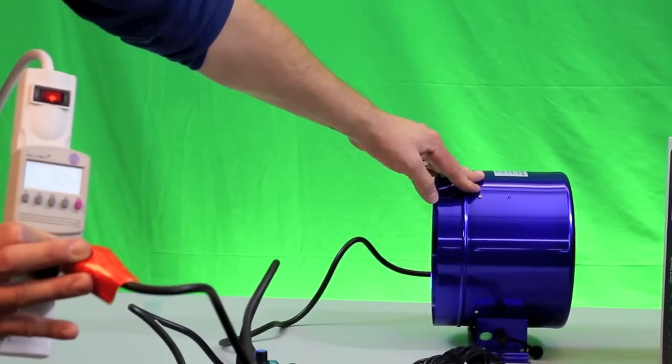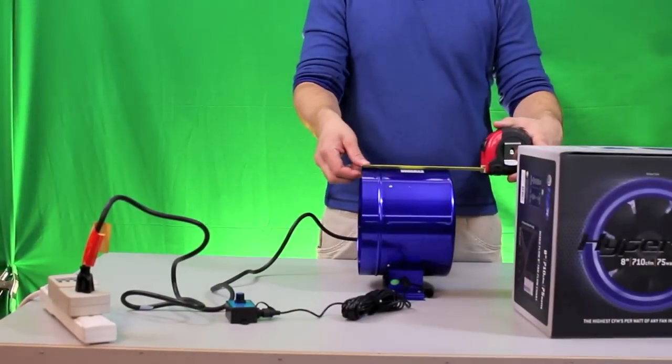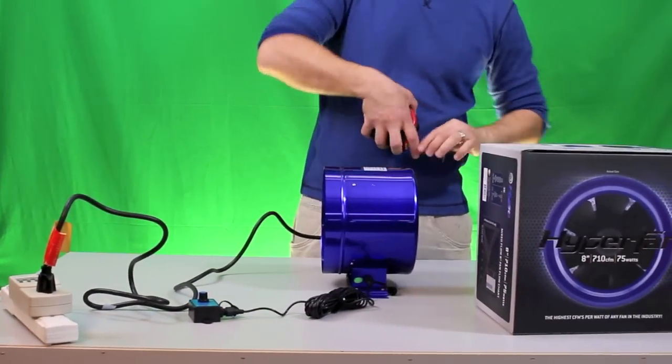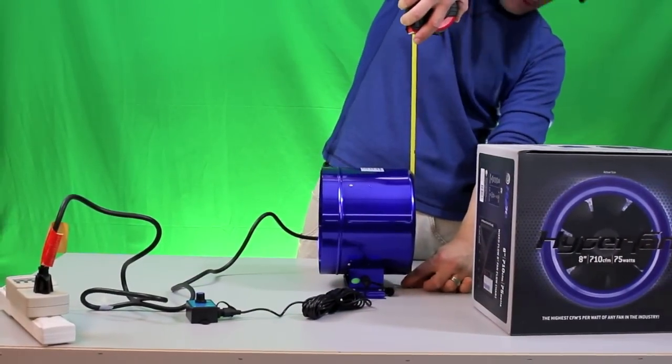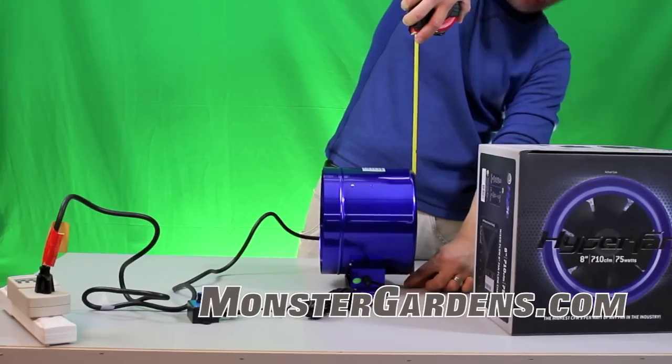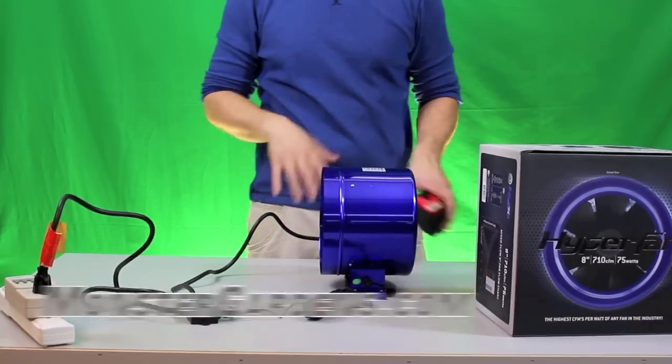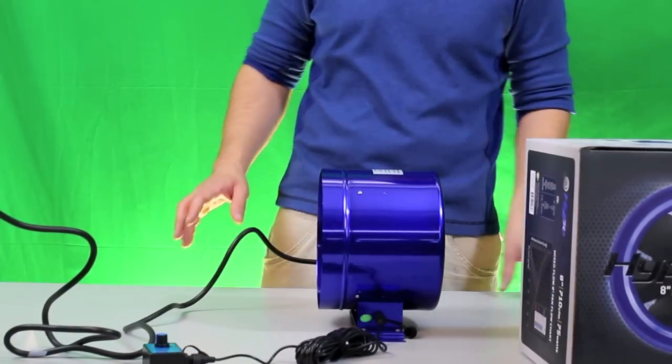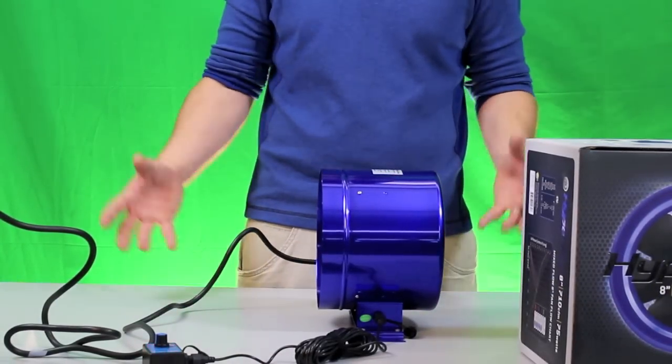A length of six and a half inches, a height of about eight and three quarter inches, right around, right under nine inches. 8-inch fan, 710 CFM, let's say about 80 watts.